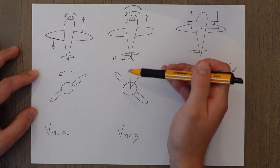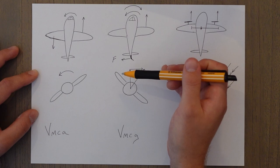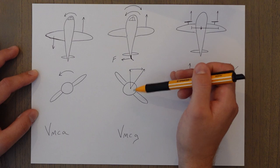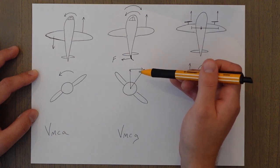To supplement this technique, you can use the banking method where you roll the wing towards the live engine and you use a horizontal component of the lift force to help with your directional control.